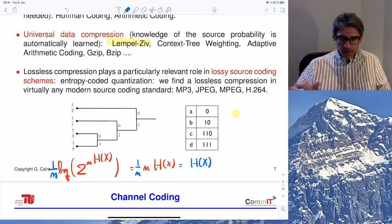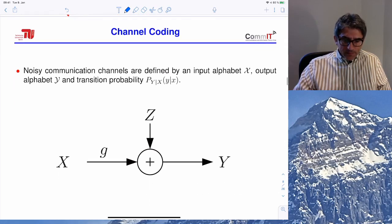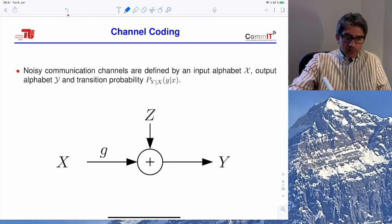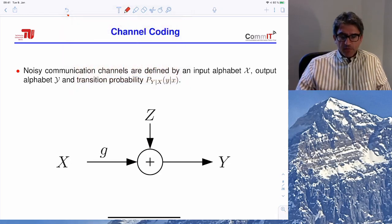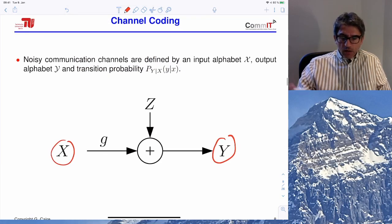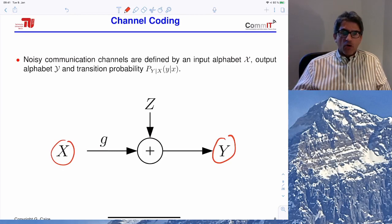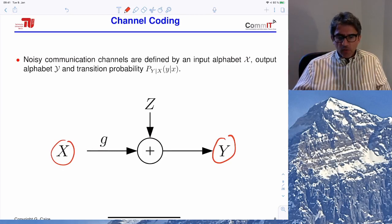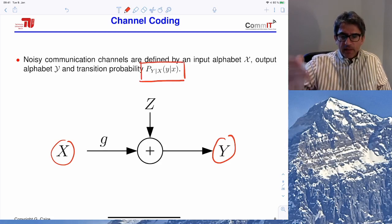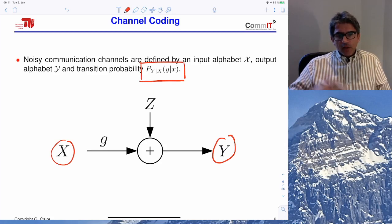The second problem is channel coding: how we transmit information through a noisy channel. A channel is a random transformation with input X and output Y. The relationship is some complicated distortion plus noise, and it can be represented by a transition probability from X to Y — Y is related probabilistically to X.